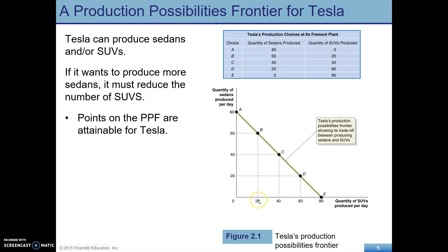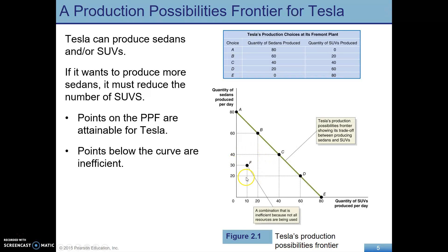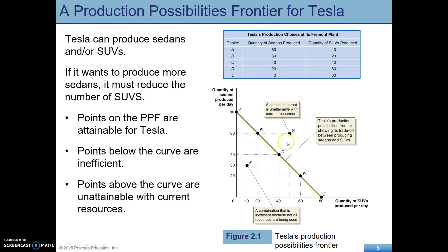Points inside the curve would be inefficient — that means we could produce more, but this is less than what we could actually attain using our current resources and technology. For example, if we were producing 30 sedans, we could go all the way out to the efficient line and produce about 50 SUVs. So anywhere inside this curve is inefficient because not all of our resources are being used in production. Outside the curve, on the other hand, those points are not attainable — anything out there we cannot produce given our current technology and available resources.